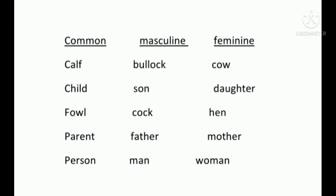Let's take some more examples of common, masculine, and feminine genders. 'Calf' is common — masculine is 'bullock' and feminine is 'cow'. Similarly: child/son/daughter, fowl/cock/hen, parent/father/mother, person/man/woman. This is how common, masculine, and feminine nouns are classified.